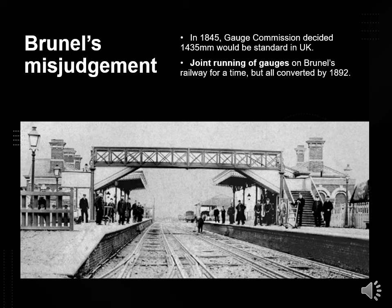In 1845, the Gauge Commission declared that the 4 foot 8.5 inch gauge, or 1435 mm, would become the standard, mainly because 87% of the railways had already been built to that gauge. The standard gauge was also cheaper to construct, and conversion from broad to narrow easier to carry out, as no additional track bed widening would be required. This image shows the joint running of gauges in Brunel's railway for a time — a complex track system which clearly requires more extensive maintenance.